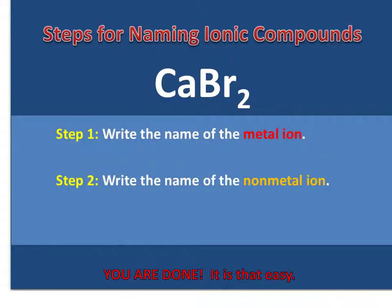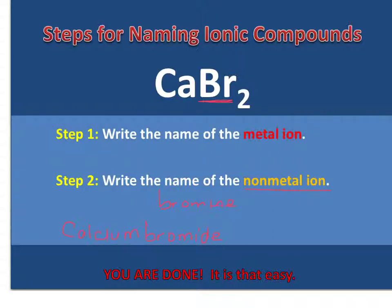Now we're going to look at naming ionic compounds — how do we go from the formula to the name? You follow two simple steps. Step one: write the name of the metal ion. Step two: write the name of the non-metal ion. For example, with CaBr2 — our metal is calcium, and our non-metal is bromine. To write bromine as an ion, we replace -INE with -IDE to get bromide. So that gives us calcium bromide. It really is that easy.